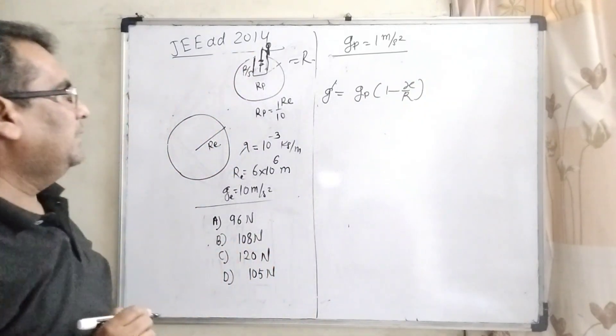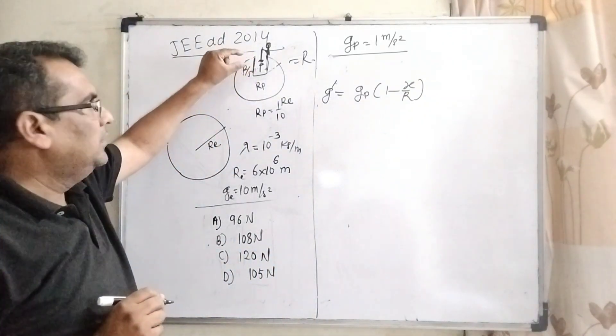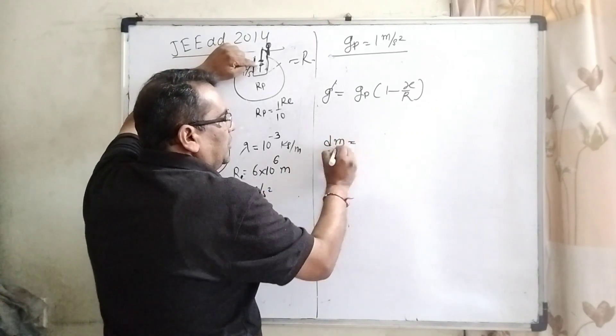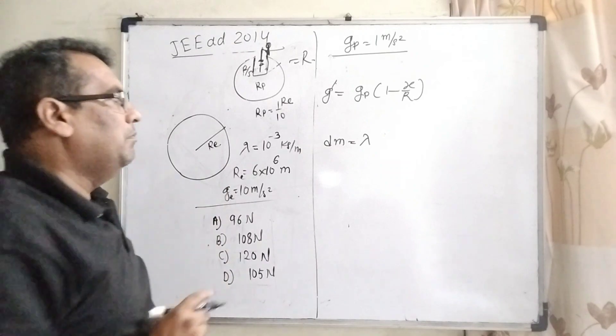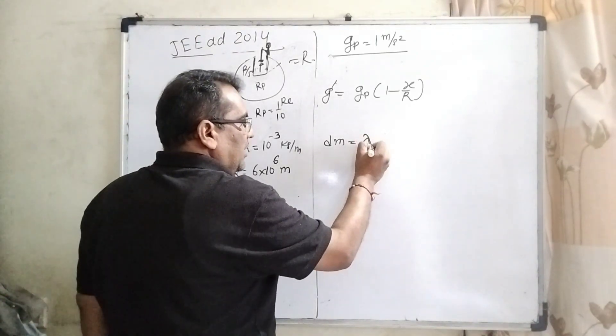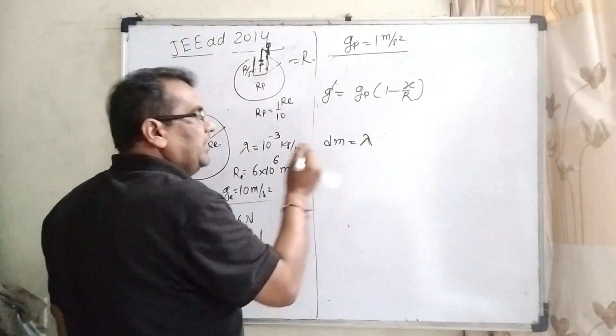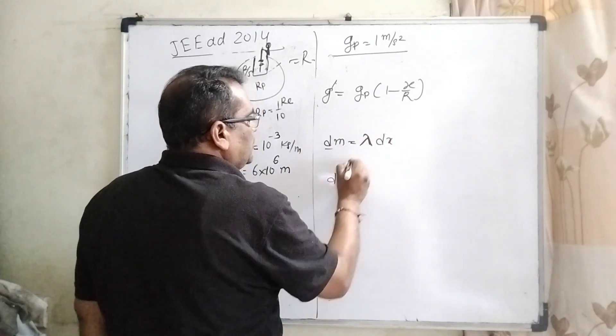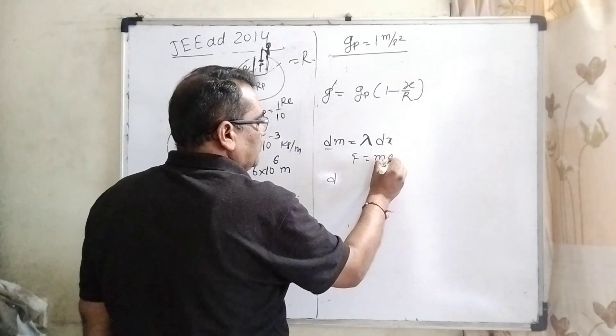Okay. Then, let us first we have to consider mass element. dm equal to mass element equal to mass density. Here, mass density is lambda per unit length and dx. And, as you know that force equal to mass into acceleration.